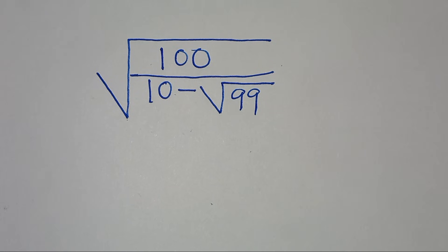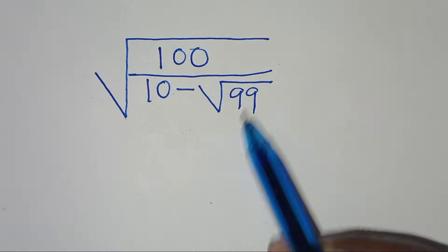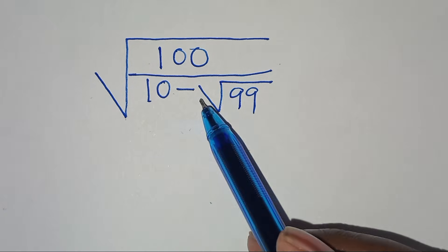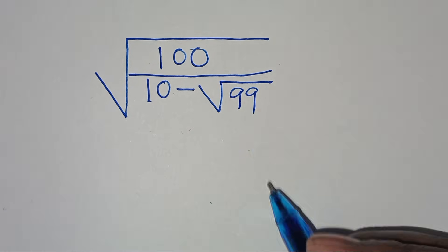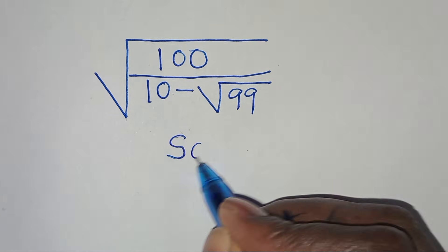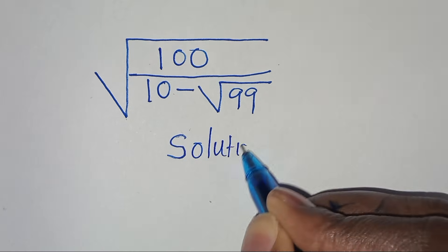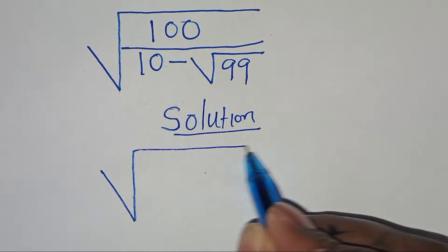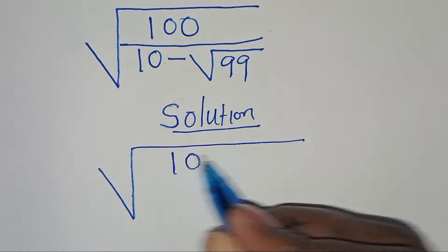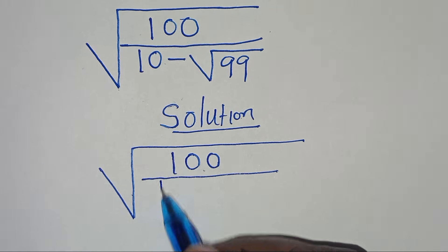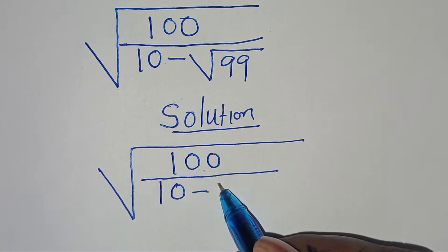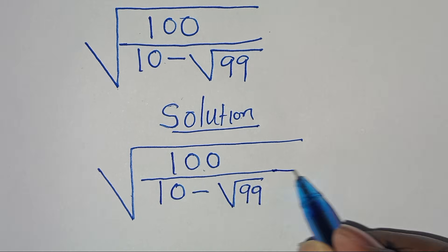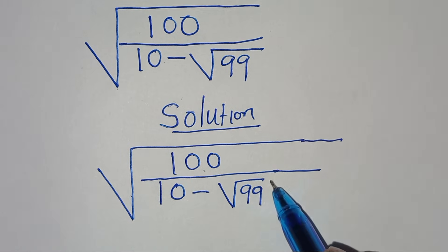Hello everyone, you are welcome to this nice square root math problem, which is the square root of 100 divided by 10 minus square root of 99. Let's provide a solution. We have the square root of 100 divided by 10 subtract square root of 99.